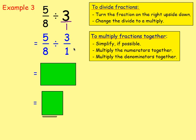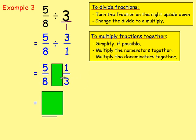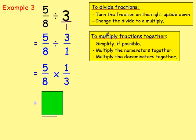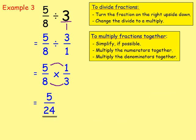Because we're dividing a fraction by a fraction, we turn the fraction on the right upside down. So 5 eighths stays as 5 eighths, and 3 over 1 becomes 1 over 3 — we've swapped the top for the bottom. The divide becomes a multiply. Simplify if possible: 5 eighths doesn't simplify, a third doesn't simplify, and none of the diagonal pairs share a common factor. So we just multiply: 5 times 1 is 5, 8 times 3 is 24 — giving 5 twenty-fourths.